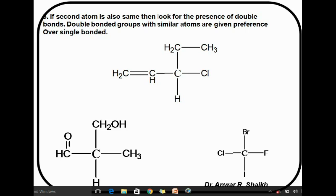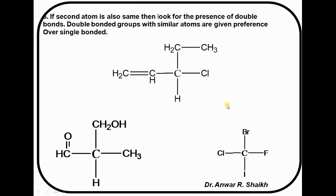Sequence Rule No. 3 states that if the second atom is also the same, then look for the presence of double bonds. Double-bonded groups with similar atoms are always given preference over single-bonded ones. For example, in this compound, chlorine is the first item with atomic number 17. There is a tie between the two remaining groups — both have carbon as the first and second atom. But in the vinyl group there is a double bond compared to the ethyl group, so the vinyl carbon will be given the second preference.